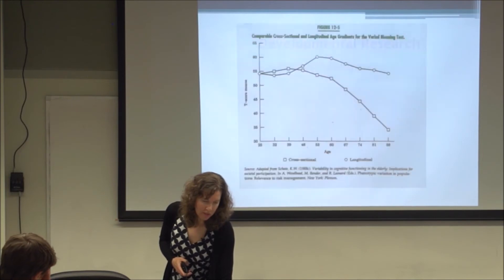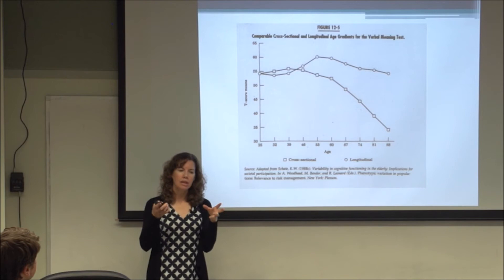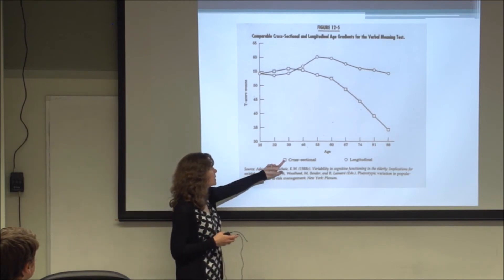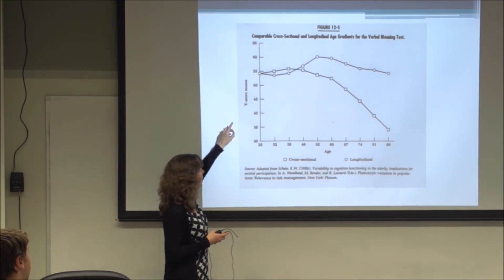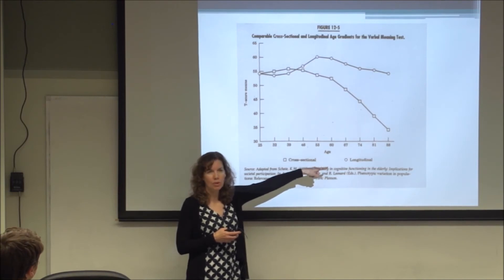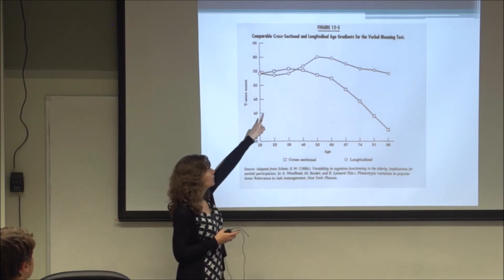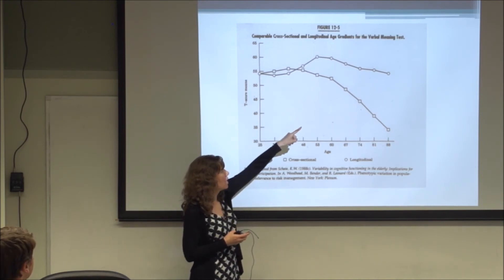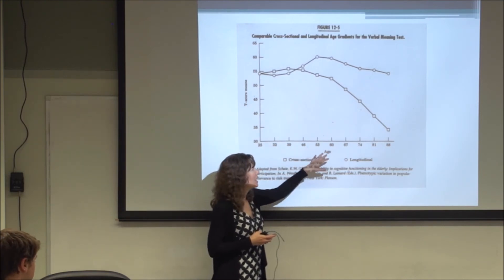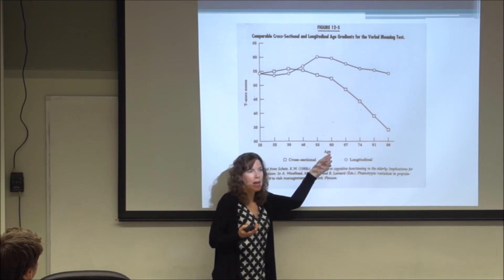Here's a study looking at a verbal meaning test, where people were given a word and asked which other words had the same meaning. They looked at the data both cross-sectionally — shown in squares — and longitudinally — shown in circles. The cross-sectional data suggests a large decline in verbal meaning abilities as people get older. But the longitudinal data, following the same people over time, shows basically no decline in verbal abilities. This is an example of cohort effects — the words may not even have been around when older participants were younger, so they may not know those words.